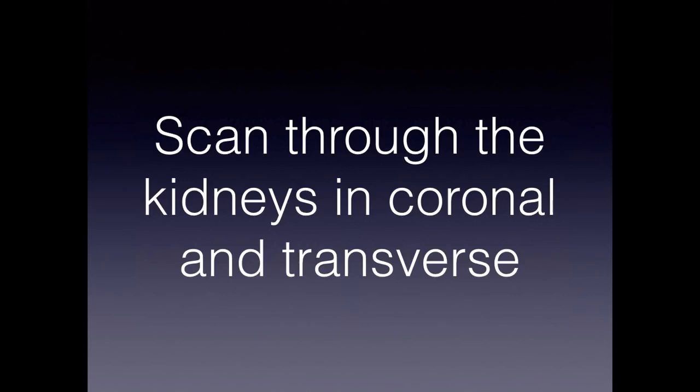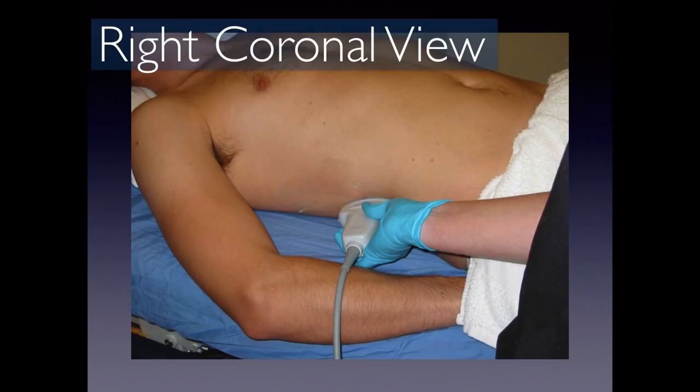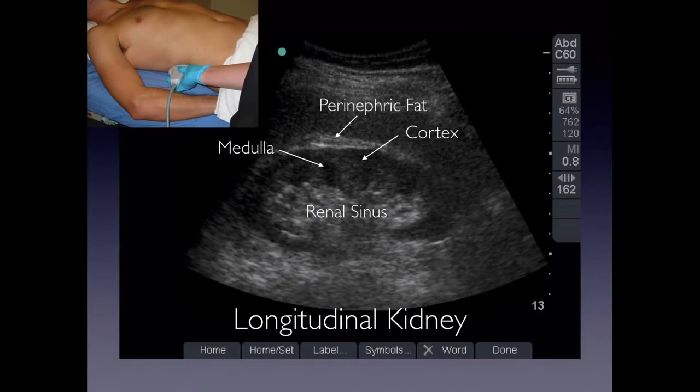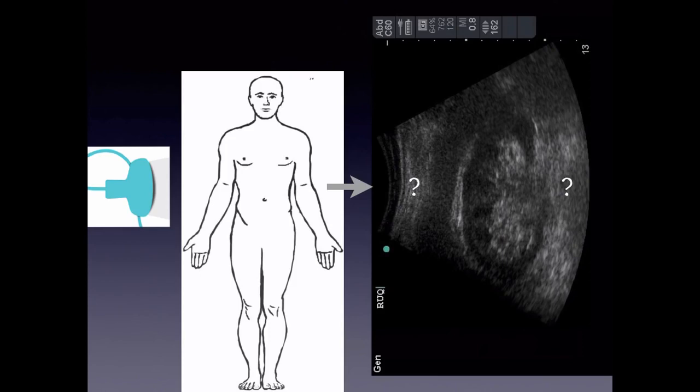You want to scan through the kidneys in coronal and transverse views. For the right coronal view, the indicator is up towards the patient's head to get a longitudinal image. You can see the perinephric fat, the cortex, and the medulla which is slightly hypoechoic to the cortex, and the renal sinus appears bright.